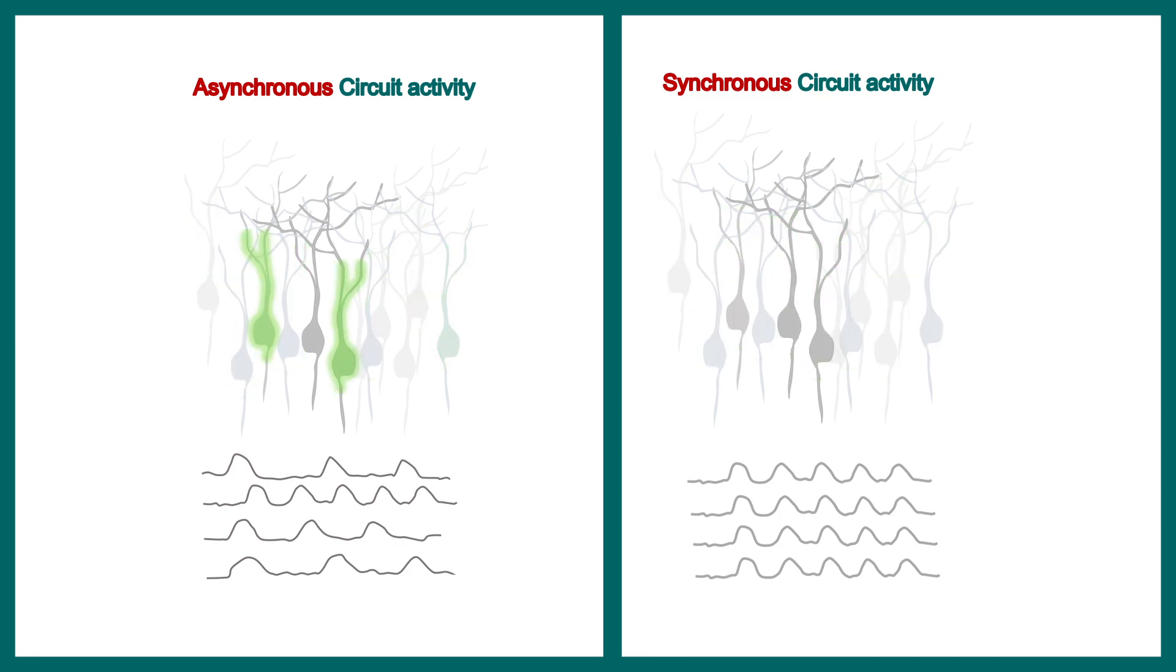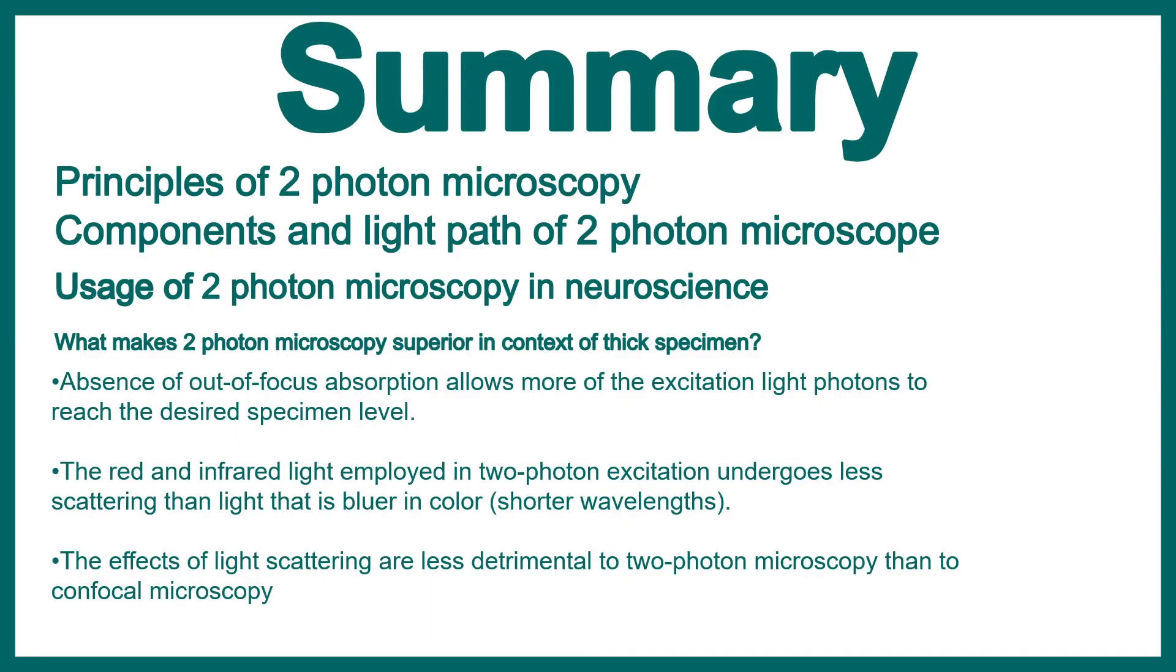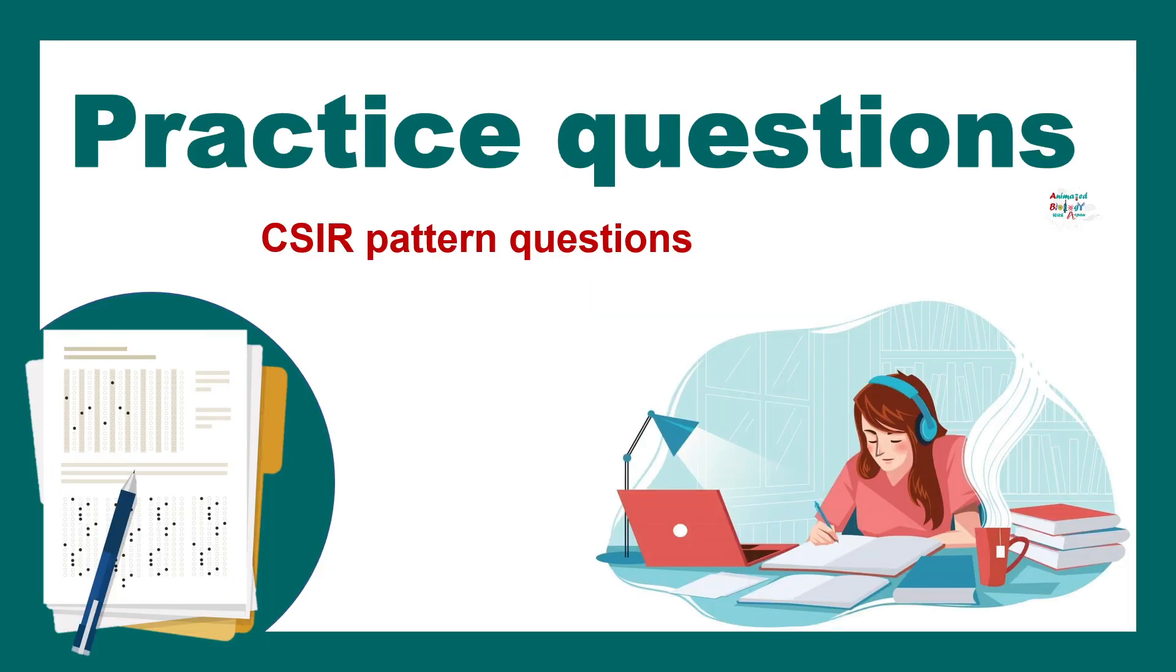I've given enough overview about the working principle of two photon microscopy. This is a quick summary of two photon microscopy. This tells us why two photon microscopy is especially useful for thick specimens. Take a look, take a screenshot. Let's practice some questions which are of CSIR pattern.